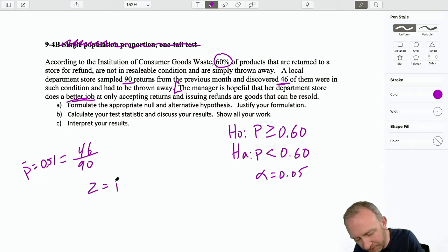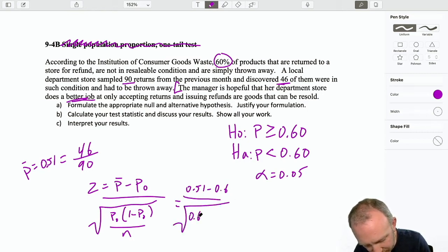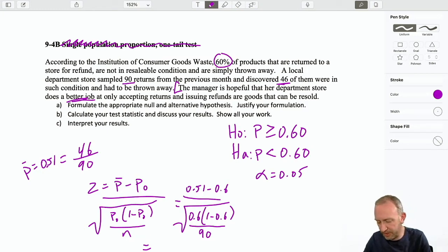Now we can calculate our test statistic. That test statistic is very familiar. The standard error is a little bit different. This is that hypothesized value and the sample size. Important to remember that p0 in the denominator, that's your hypothesized value, not your sample value. So this gives me 0.51 minus 0.6, square root of 0.6 times 1 minus 0.6 over 90. 0.51 minus 0.6 divided by square root 0.1, negative 1.74.